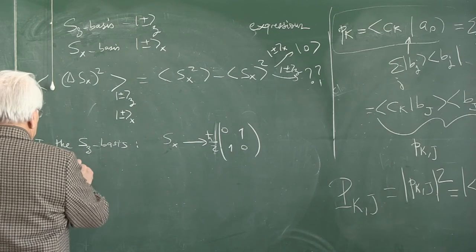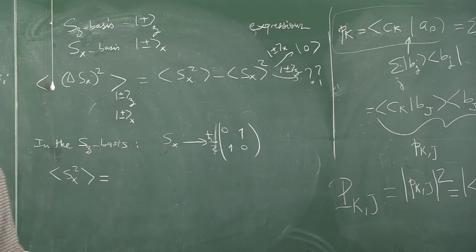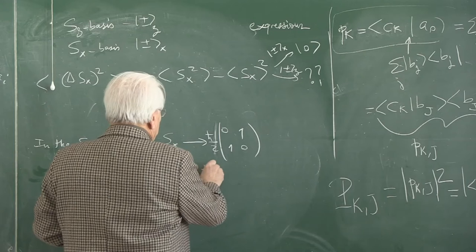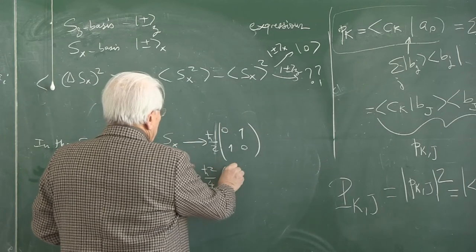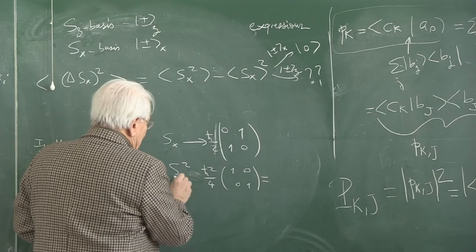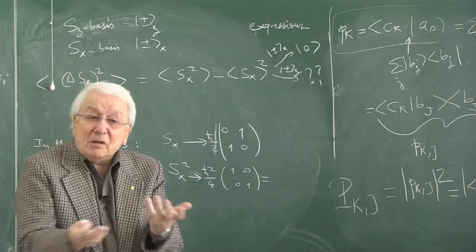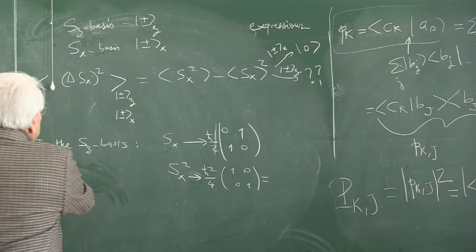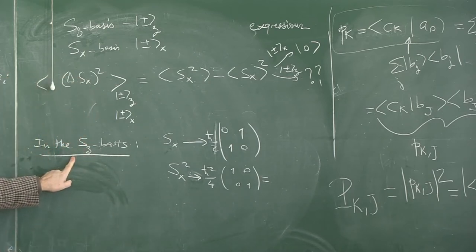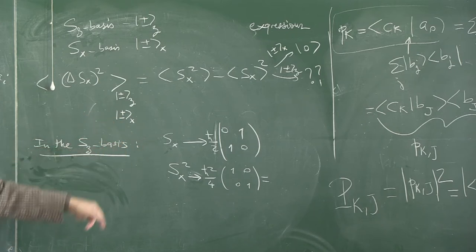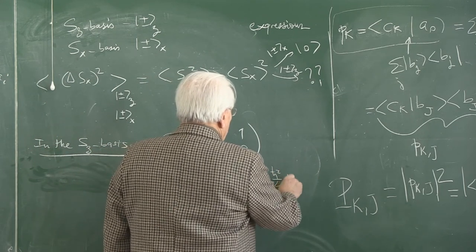Sx squared is ℏ²/4 times the identity matrix — (1, 0; 0, 1). I hesitate to write it as an equality because the matrix representation depends on the basis you are using. To write it equal to that matrix is wrong because all these things are true in this basis only, and the matrix will be different in a different basis.